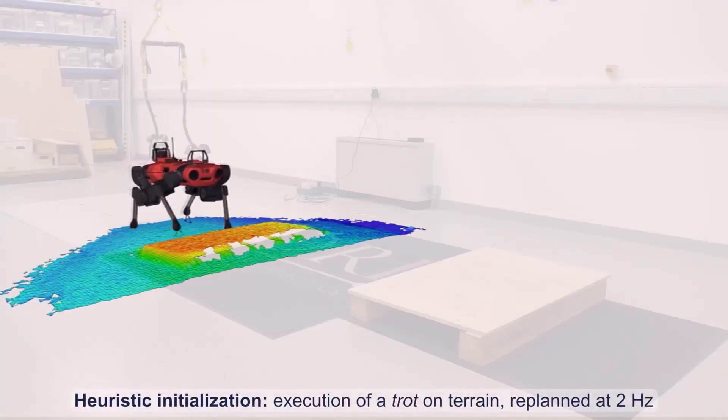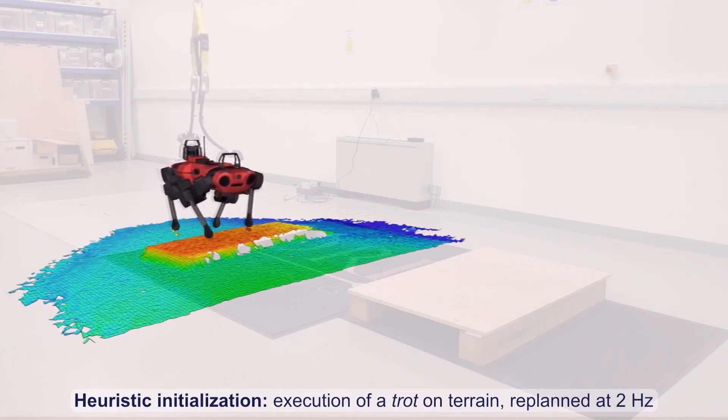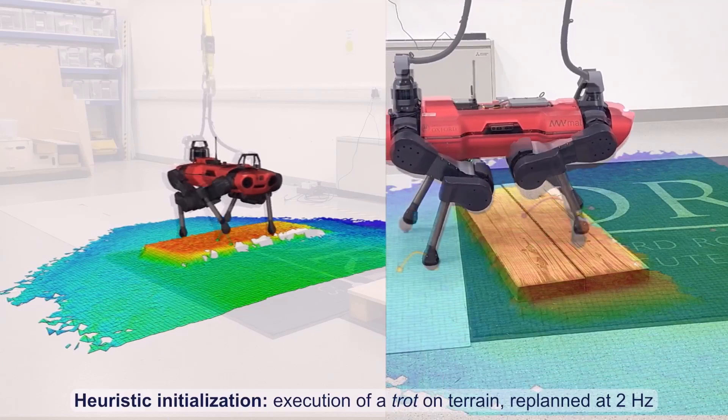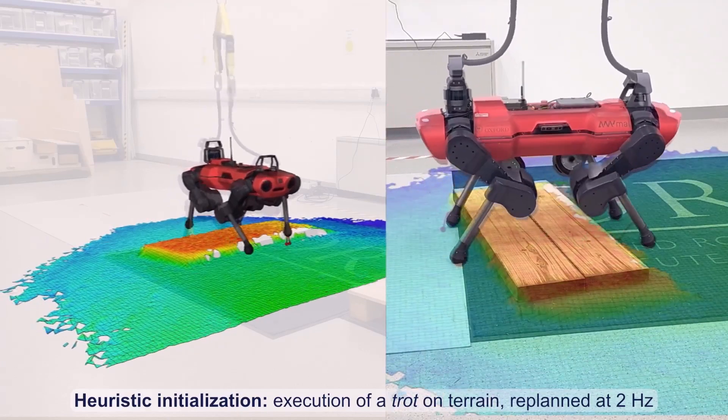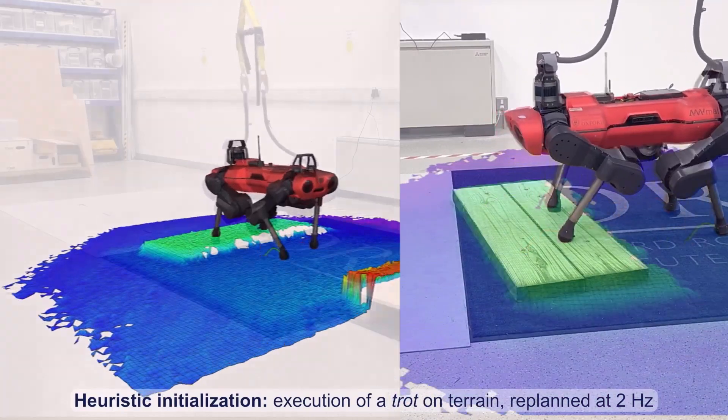In this video, the robot trots over the same terrain. This symmetric gait results in a less energetic motion of the base, which makes the solver converge faster. At each replanning cycle, the robot tends towards a near-term goal provided by an operator via a user interface.